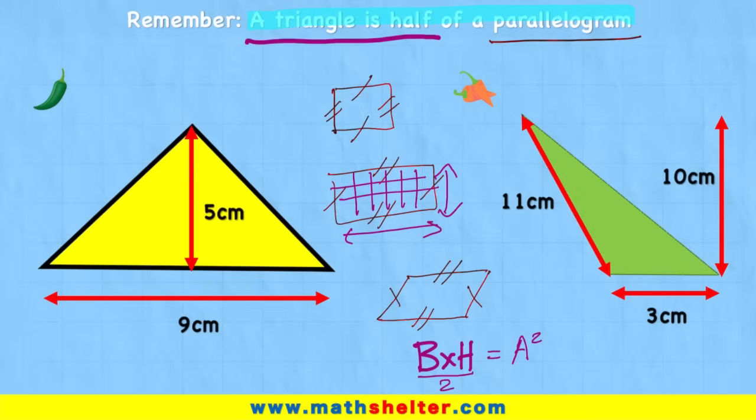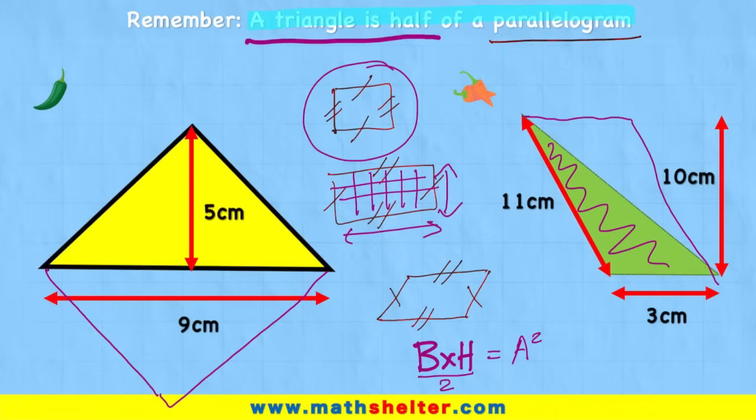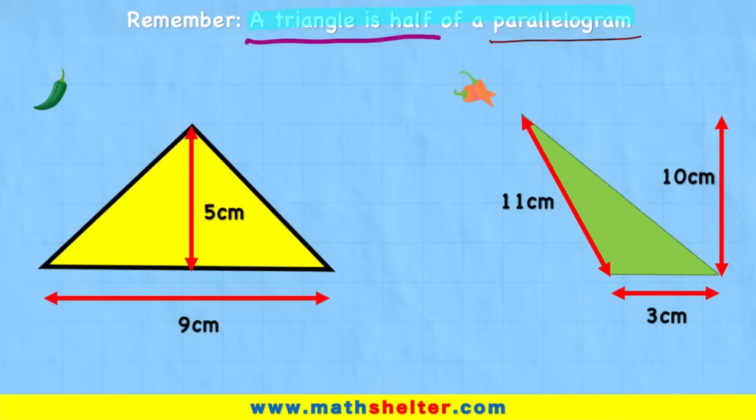Let's just see that in action. If we take this first example here, if I mirror it on the other side, we can see I now have a perfect square. Or in other words, I have a parallelogram. Or in this case over here, if I try and mirror it, we can see we have a rhombus and the triangle takes up exactly half of that space.